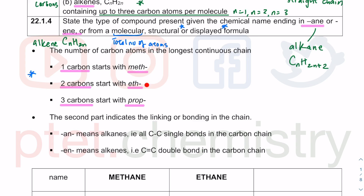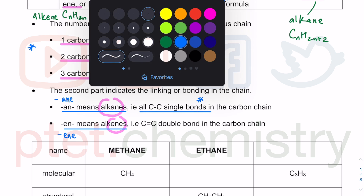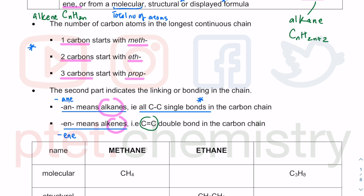The second part of the molecule name tells you whether it is an alkane or alkene. The '-ane' ending means alkane; the '-ene' ending means alkene. Alkane only contains carbon-carbon single bonds — very important. When you have an alkene, you have a carbon-carbon double covalent bond. These are all molecules with covalent bonds — sharing of electrons between non-metals.